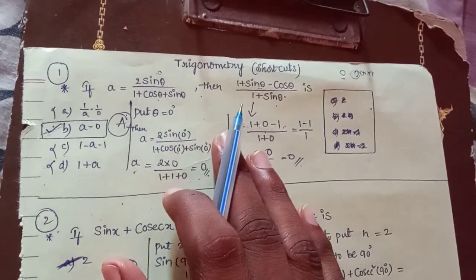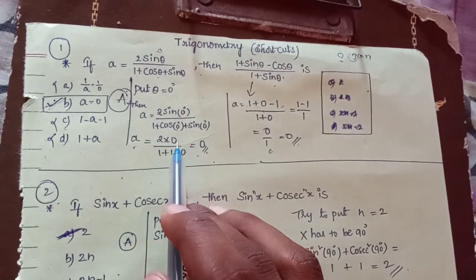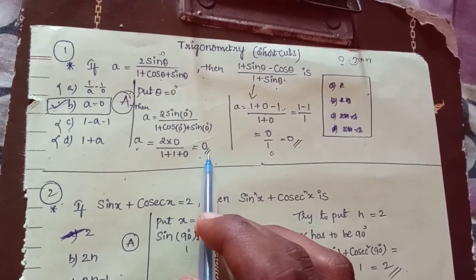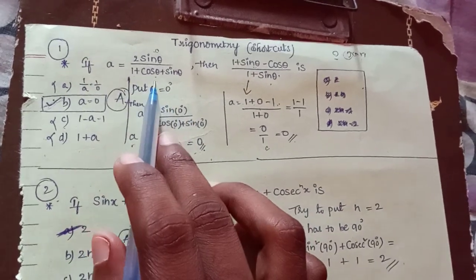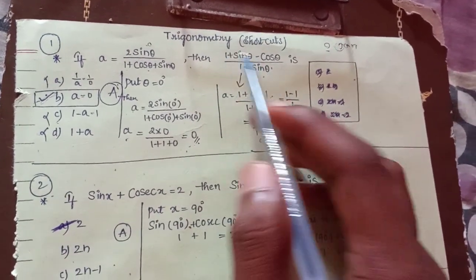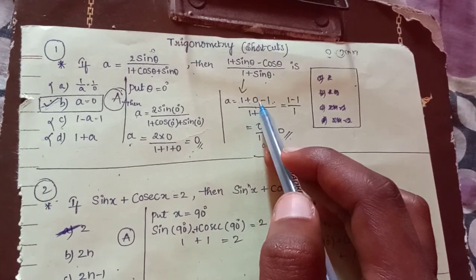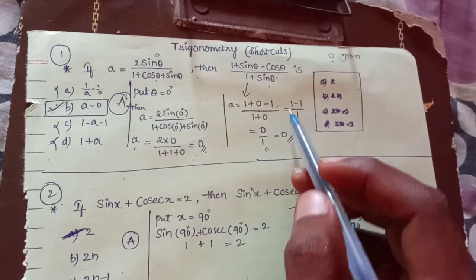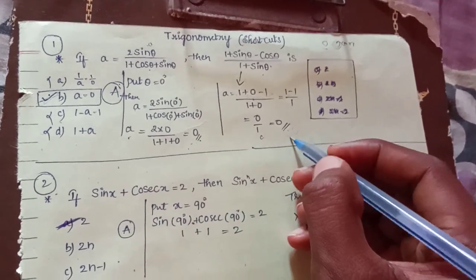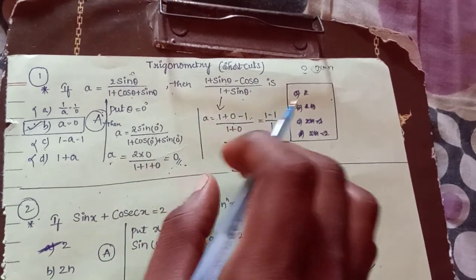First of all, put theta equal to 0 degrees. Then 2 into sin 0 divided by 1 plus cos 0, plus sin 0. You can find sin 0 value is 0, divided by 1 plus cos 0 value 1. So 1 plus sin 0 is equal to 1, minus 1 divided by 1 plus sin 0. So 0 is equal to 0, and here a is equal to 0.